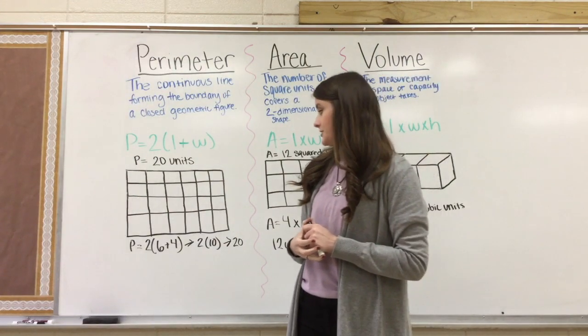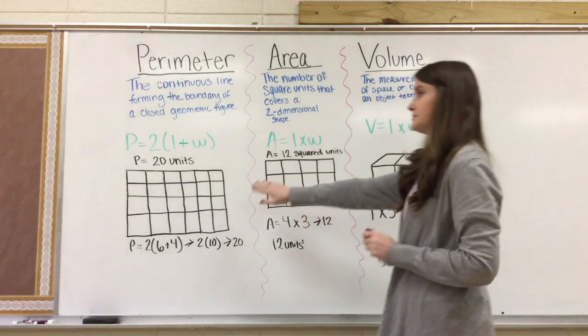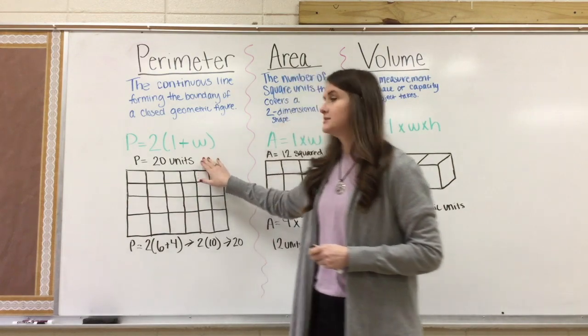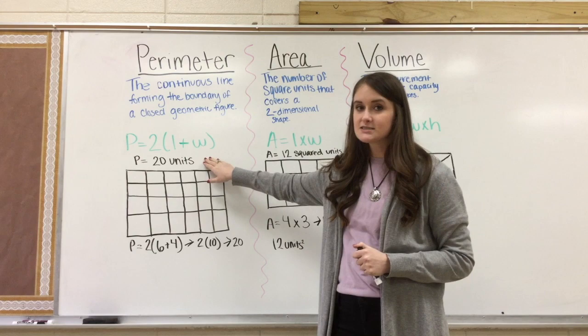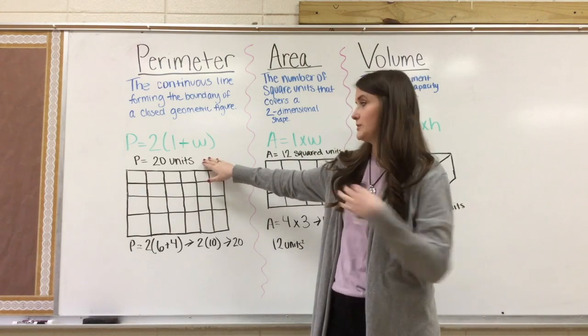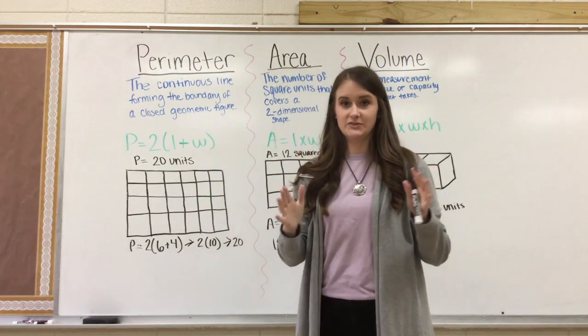Okay, so now, just a quick reminder about how you label your answers. For perimeter, it's just the units. So it would be 20 units. Or if it was inches, 20 inches, 20 centimeters, 20 meters. It would be just 20 and then just the unit.